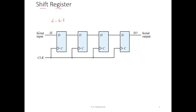The first flip-flop is connected to the serial input, so data comes in bit by bit. Whenever one bit arrives, with the clock pulse going from 0 to 1, that bit is accepted by the first flip-flop, and whatever data was stored in the first flip-flop is passed on to the next one, and so on.